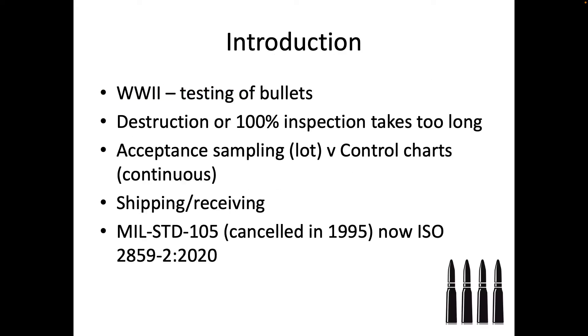In the introduction, acceptance sampling is pretty old. It was developed around the 1930s when you started looking at how do you know if bullets are good during World War II. They didn't want to destroy all the bullets to see if they were good, so they thought of taking a sample. Acceptance sampling is used when you have to destroy the items and or if 100% inspection takes too long to do.